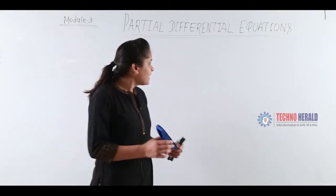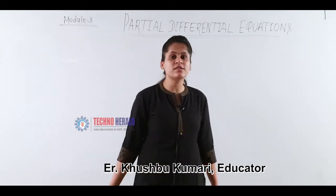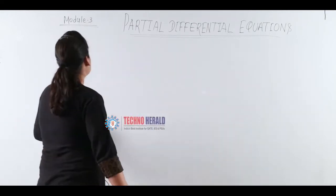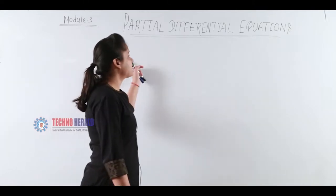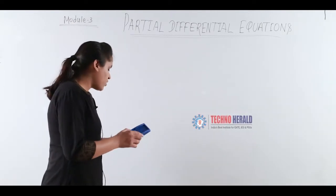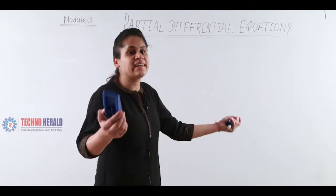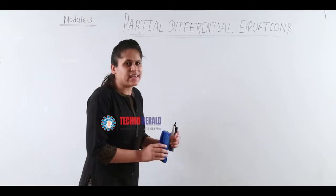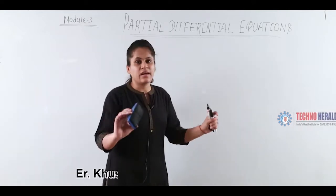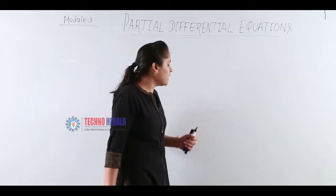My dear students, up to here in Mathematics 3 we have completed our two modules: the probability and the probability distributions. Today, I am going to start the third and last module, partial differential equations — the simplest of all three. Because in probability and probability distribution there is at least some theory, this topic is purely numerical. You just have to solve the equations and find the answer; no theory is there.